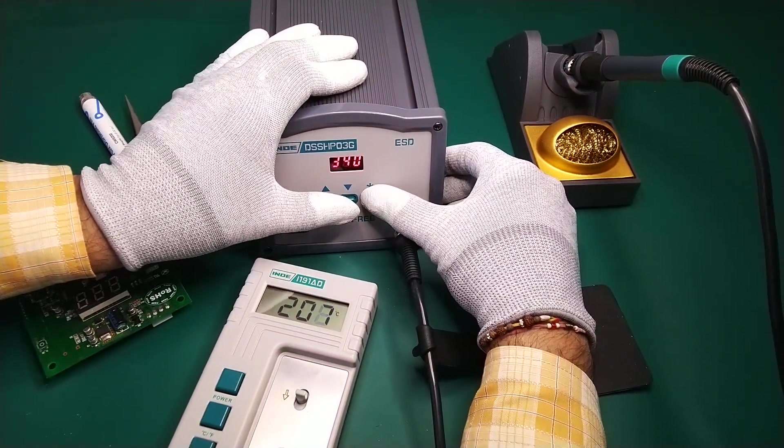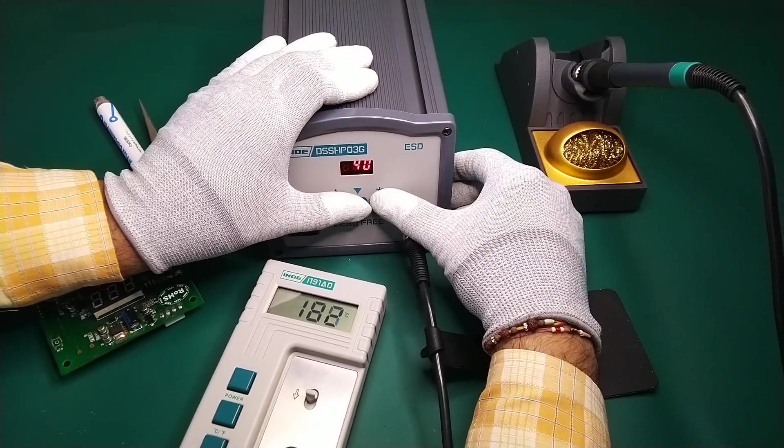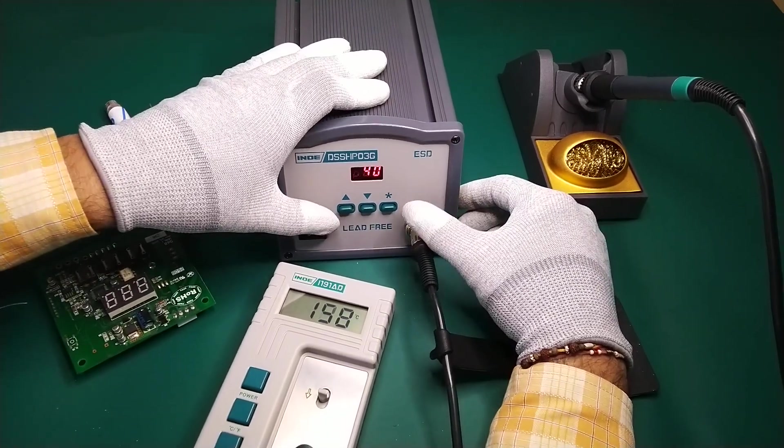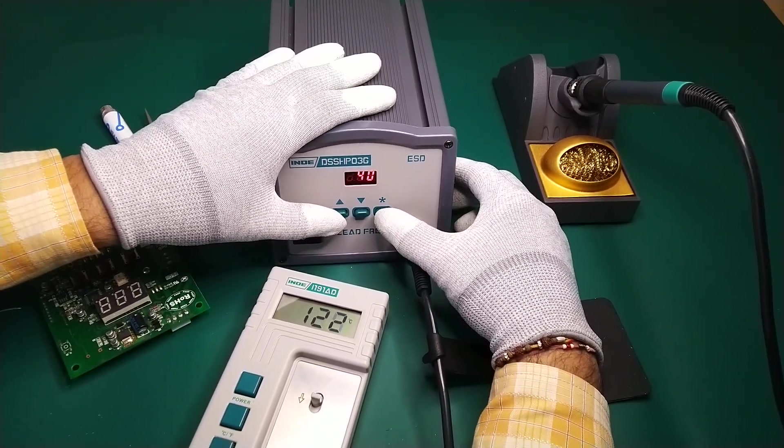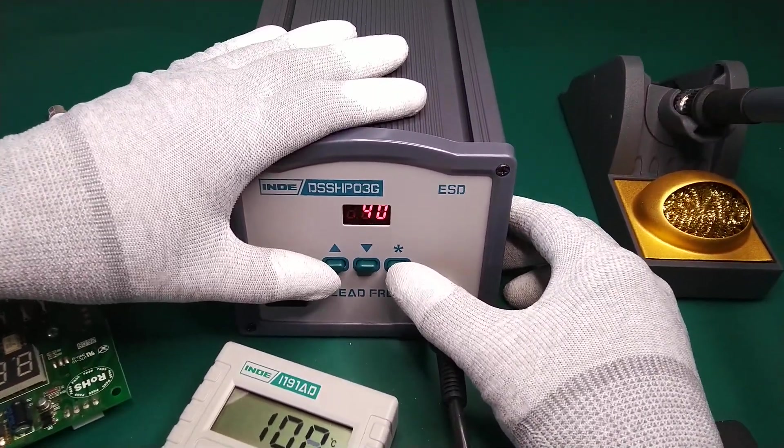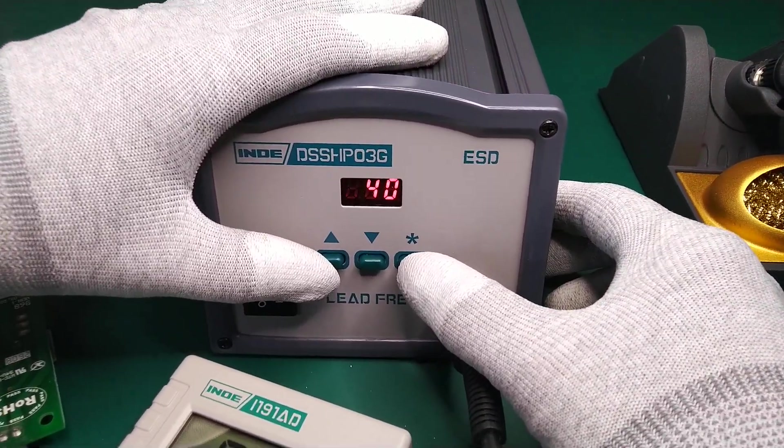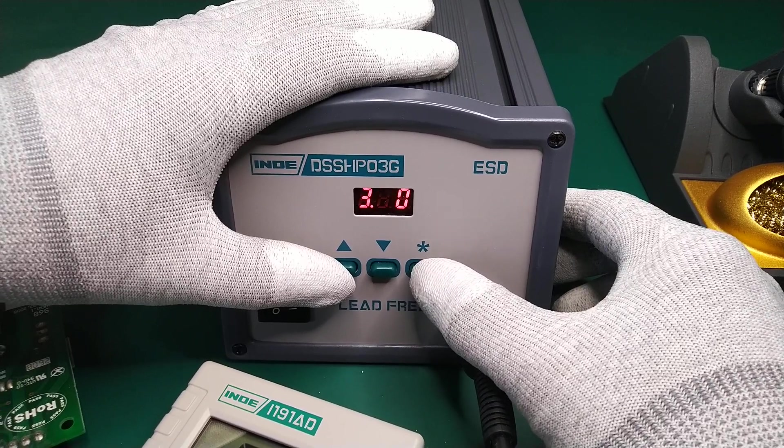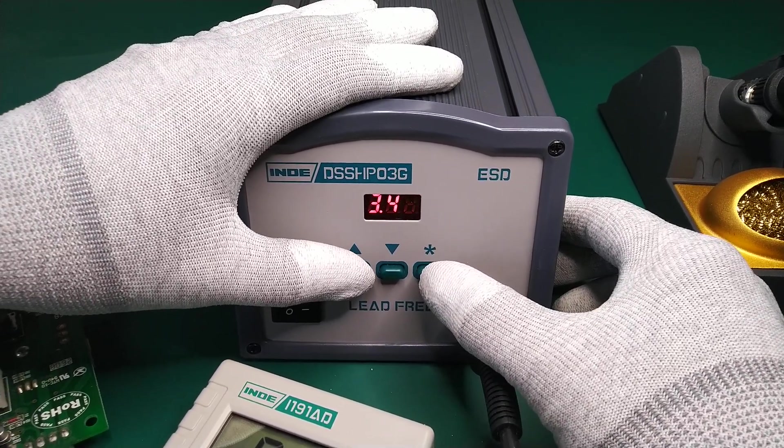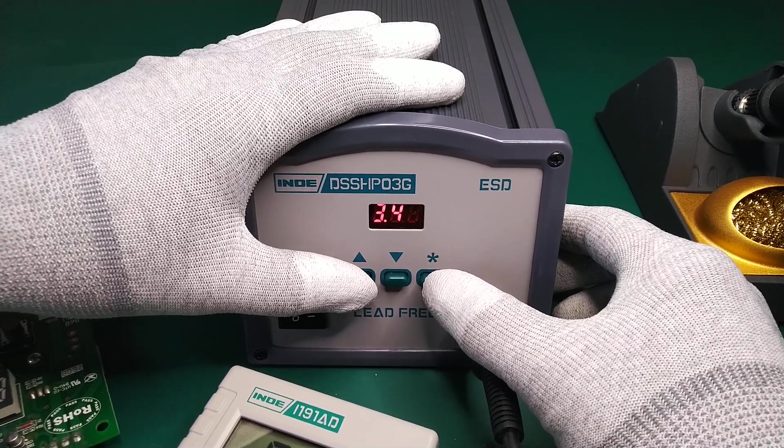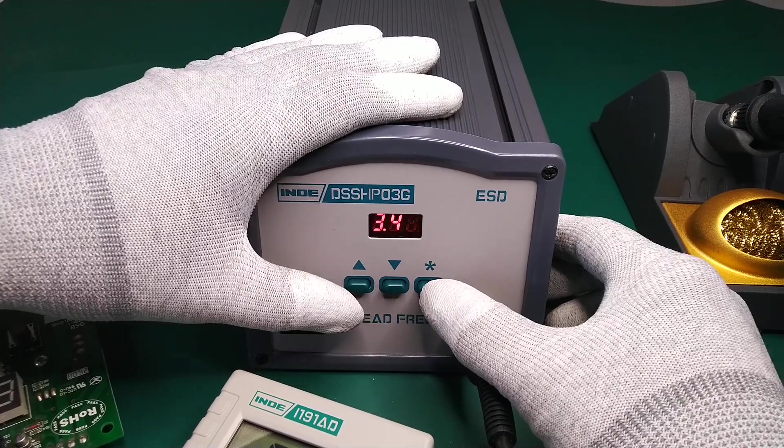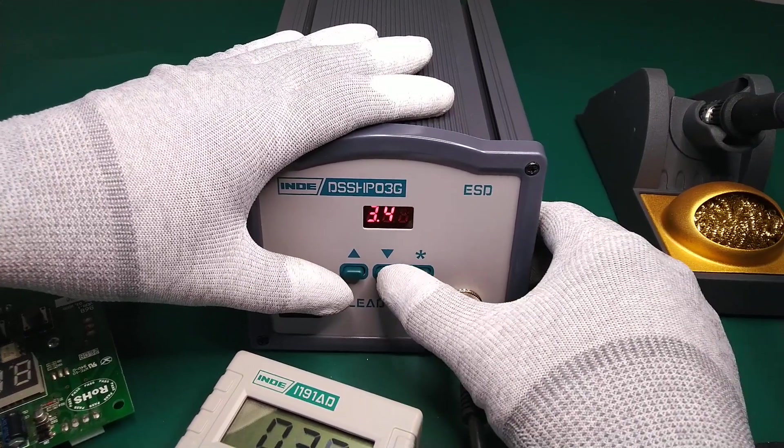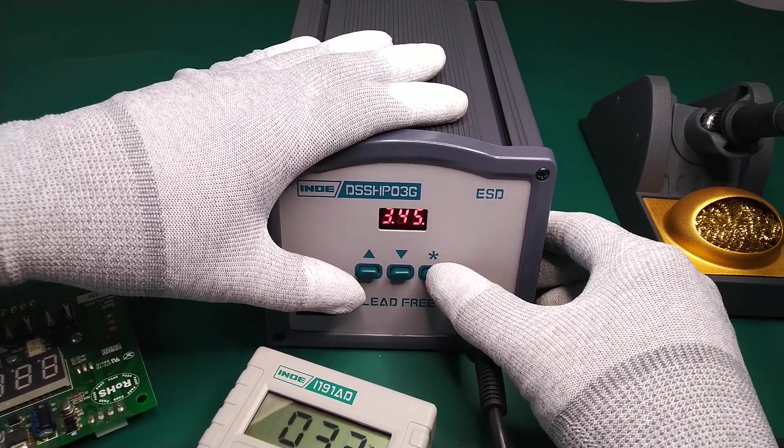First, we will press the star button and then simultaneously press the up and down buttons. Now the LED is blinking. We will move the cursor to the third digit by pushing the star button, then feed in 345 which was measured on the thermometer, and press the star button.